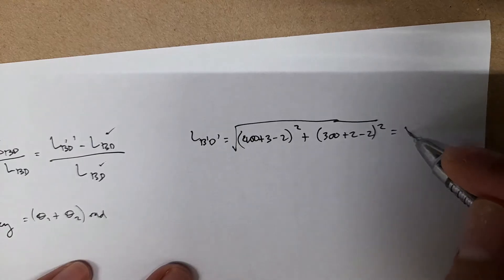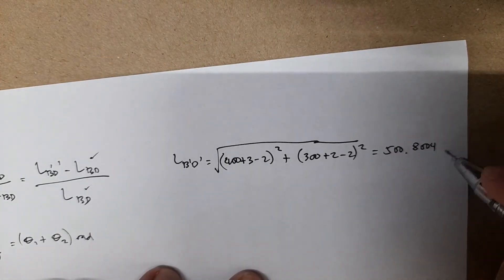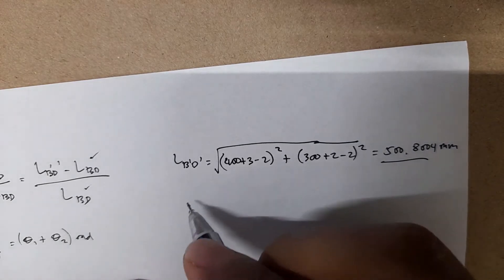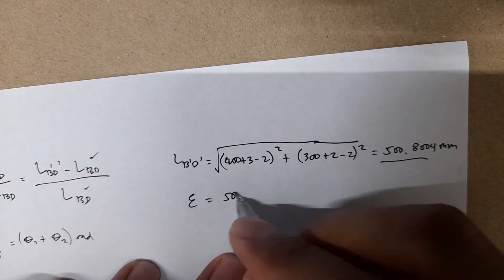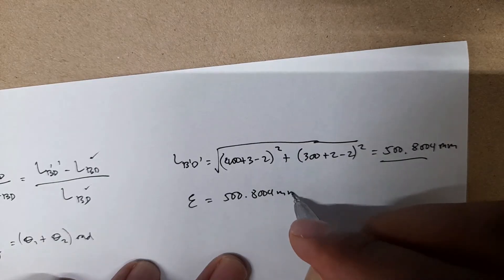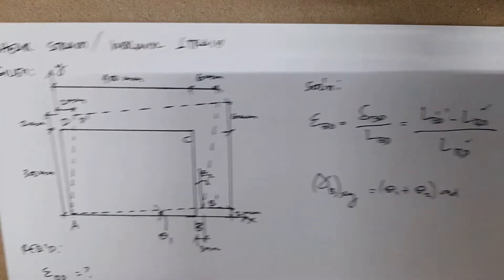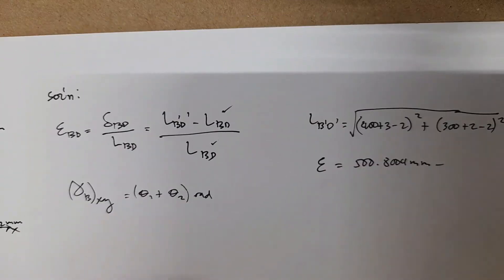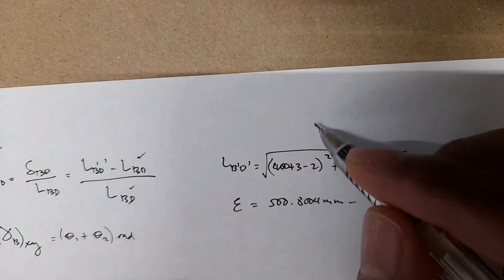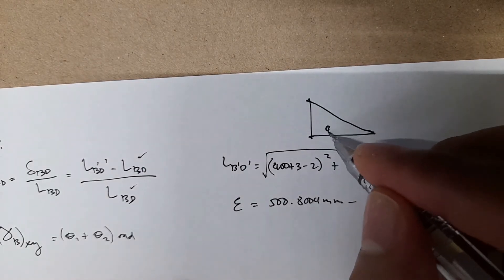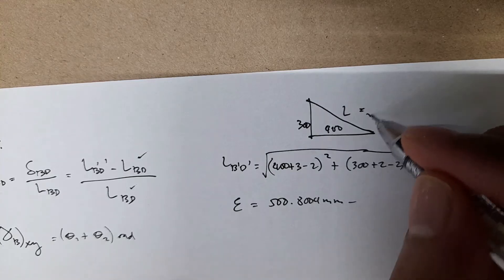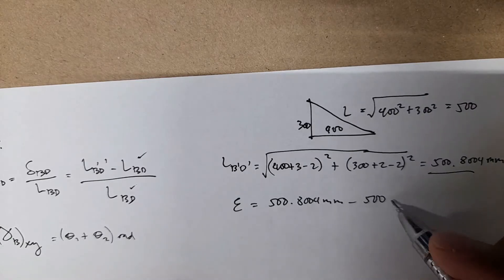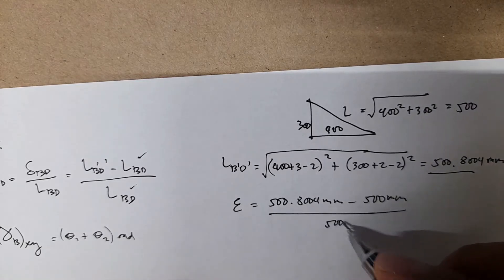LB'D' is equal to 500.804 mm. The original length LBD is the square root of 300² plus 400², which equals 500 mm. So the deformation is 500.804 minus 500, giving 0.804 mm.